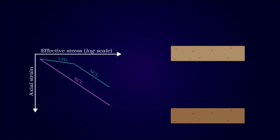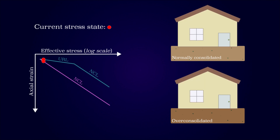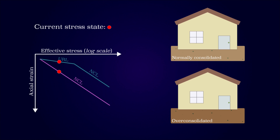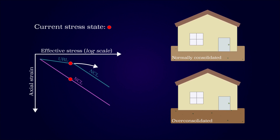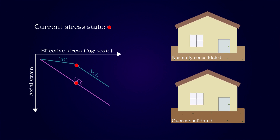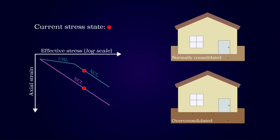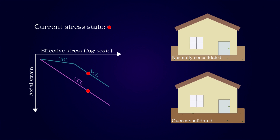Let's consider two construction projects, where one is constructed upon a normally consolidated soil and one on an overconsolidated soil. We assume that the soil response is according to the odometer test. When the structures are constructed, the consolidation process starts and the effective stress and the settlements increase. The structure constructed on the overconsolidated soil experiences significantly smaller settlements than the structure constructed upon the normally consolidated soil. At some point the pre-consolidation stress might be reached and the response of the overconsolidated soil changes to normally consolidated. The deformations of both soils will then follow the normal consolidation line. Sometimes the pre-consolidation stress is significant and won't be surpassed.